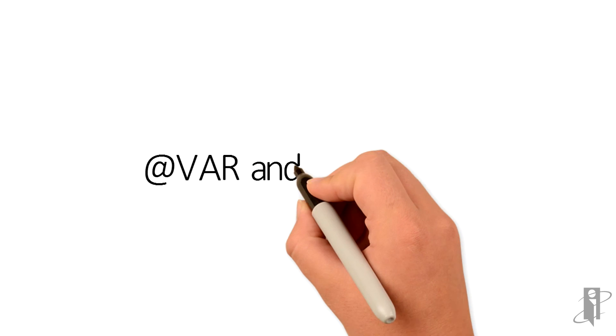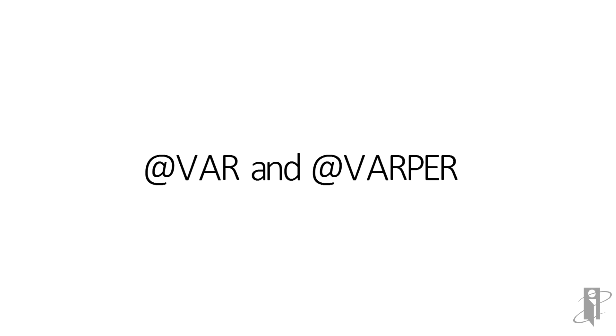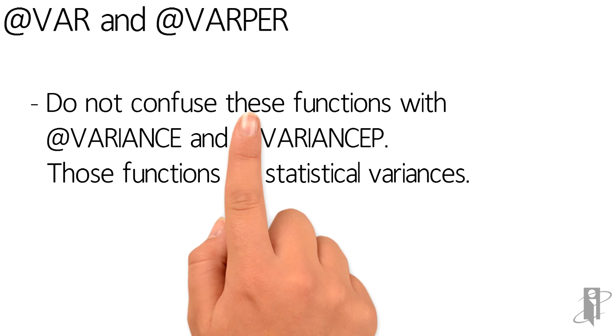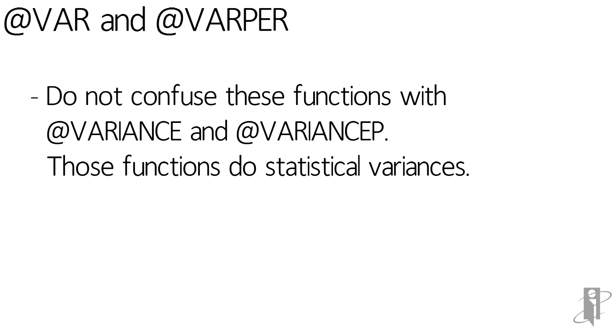It's really important: you might find ATVARIANCE and ATVARIANCEP and think those mean Actual minus Budget or (Actual minus Budget) divided by Budget. No — ATVARIANCE and ATVARIANCEP perform statistical variances. They are very fundamentally different functions. So ATVAR and ATVARPER are the ones you generally want to be using.